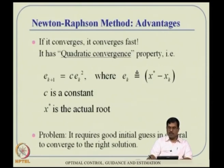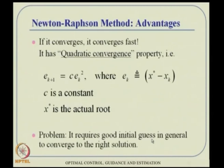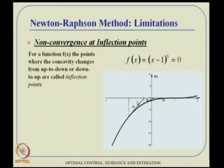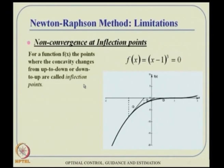However, Newton-Raphson has several problems. First, it requires a good initial guess. If you give a wrong guess, it may converge to a wrong value. Second, it does not converge at inflection points — for example, (x-1)^q type equations. Starting from a guess, the iterations may show convergence issues near such points.